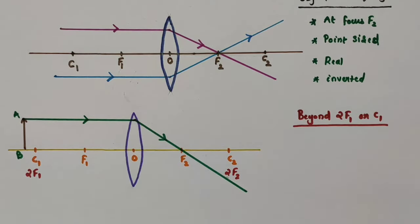We have considered two rays coming from the top part of the object, so at the point of intersection we get the image of that top part. Extend this using a scale and draw a straight line from this point to the principal axis — this is the image formed. This point is A, so I am naming this A dash B dash. AB is the object; A dash B dash is the image.